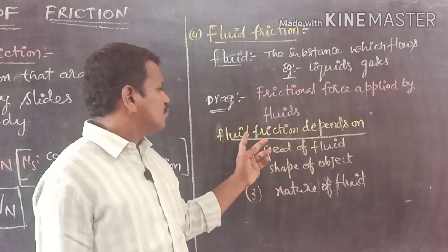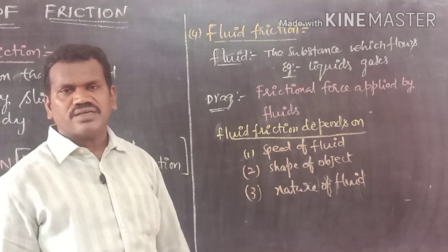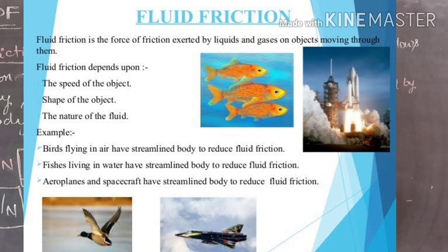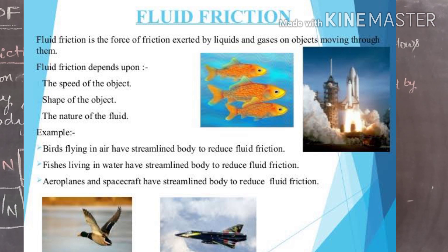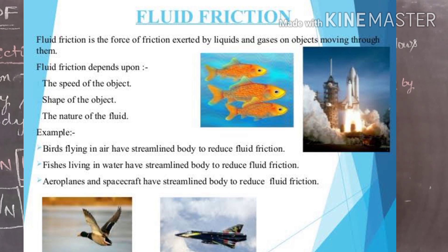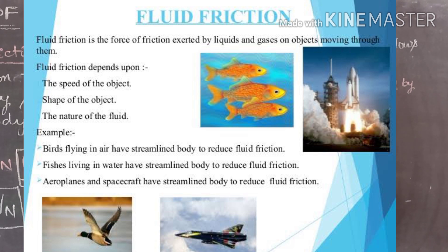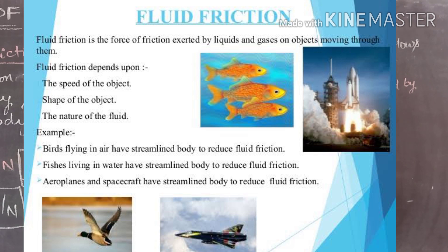Now, what are the factors that fluid friction depends on? Number one: speed of the fluid. For example, if you are swimming in a river flowing very fast — like a flood — compared to swimming in stagnant water, the frictional force will be more when the fluid speed is more. Similarly, a bird flies at high altitudes where the speed of air is less, so the friction offered is also less.